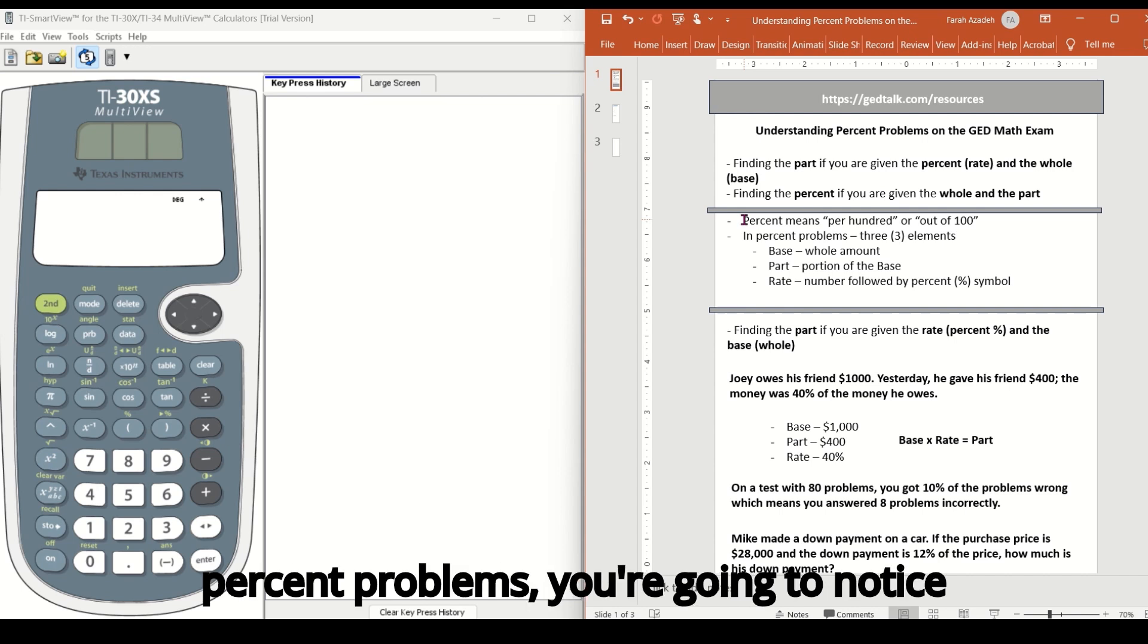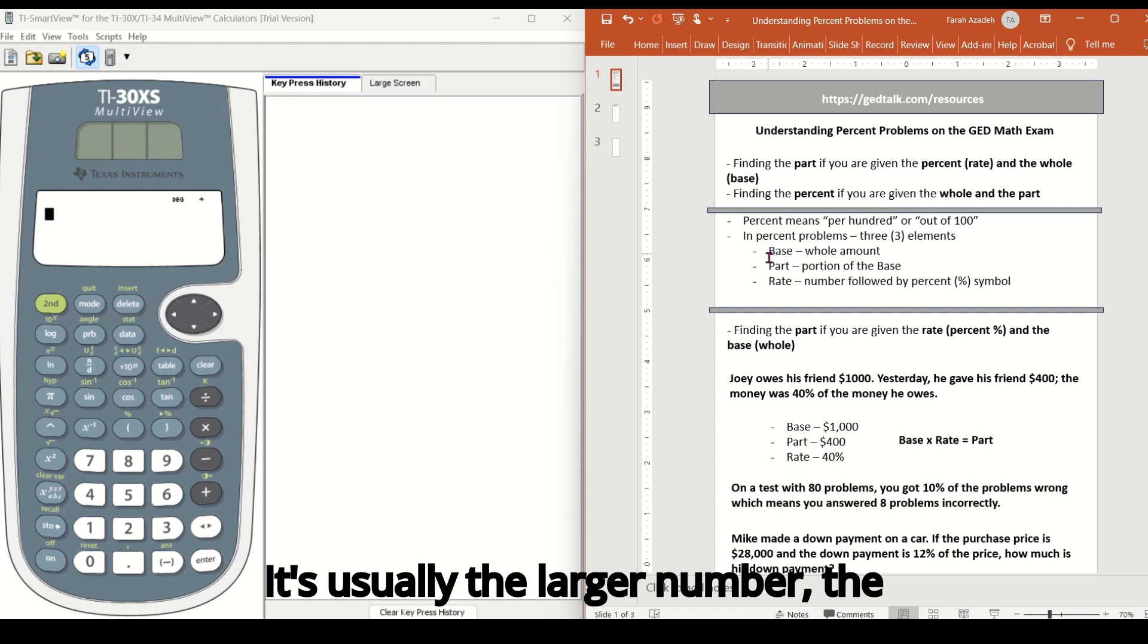So when you see percent problems, you're going to notice that there are three elements. There's the base, which is the whole amount. It's usually the larger number, the part, which is a portion of the base, and then the rate, which is the number that is followed by the percent symbol.